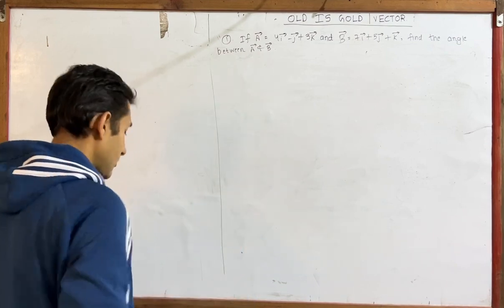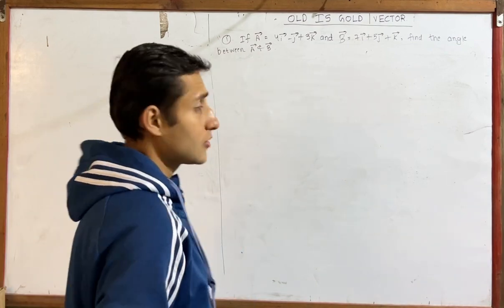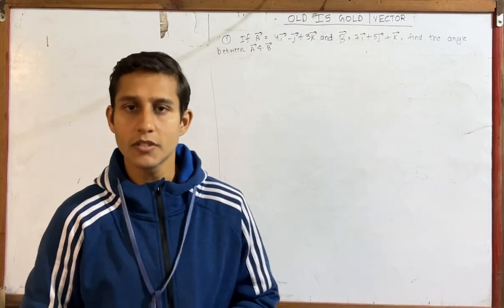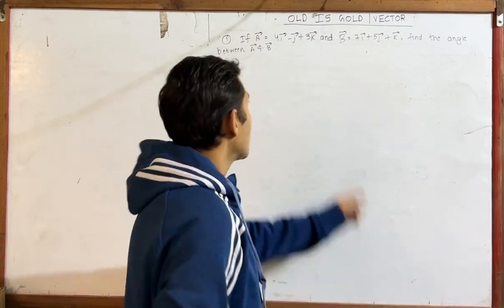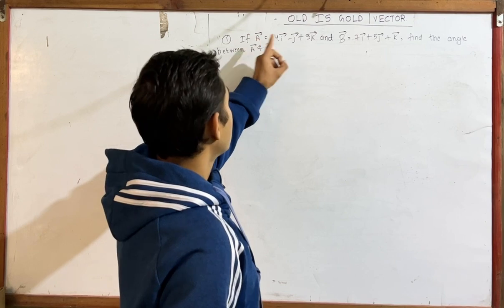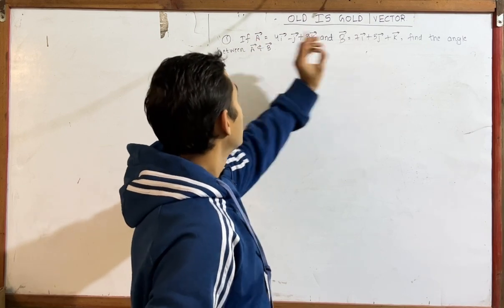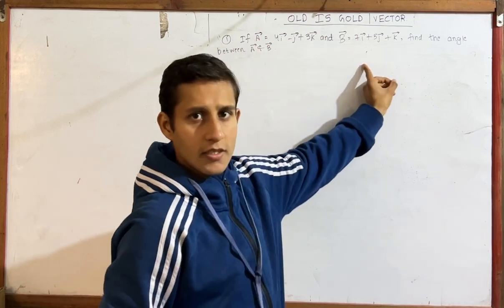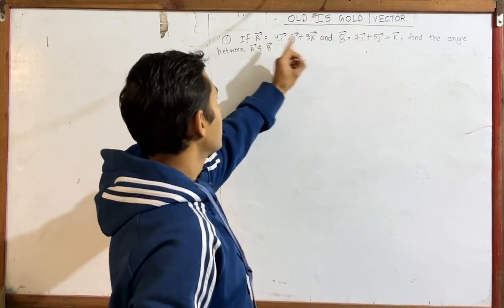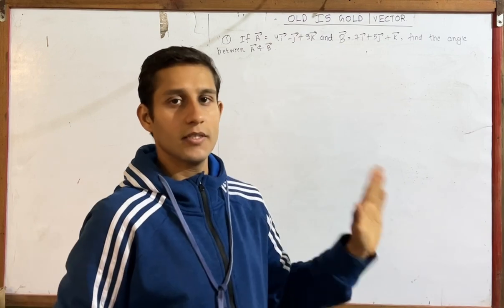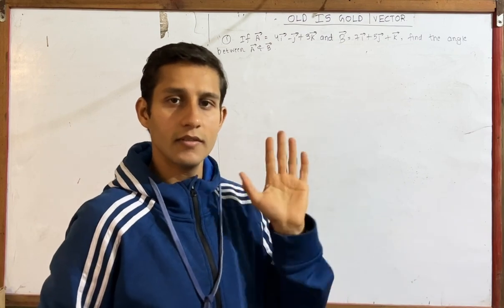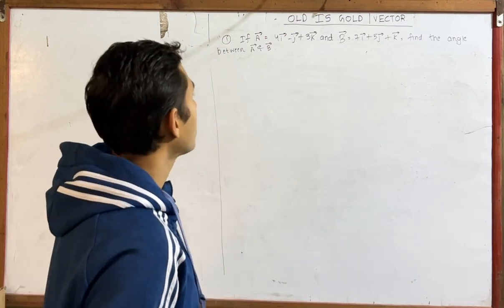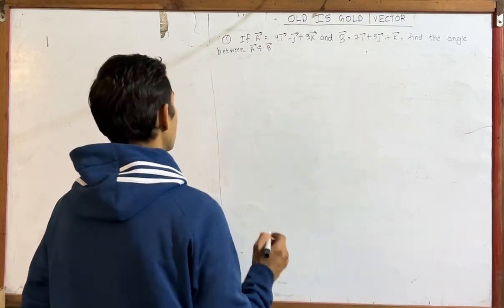Okay, so this is our question. A vector and B vector are given, and we need to find the angle. It is a very simple question. I will make a formula for this.